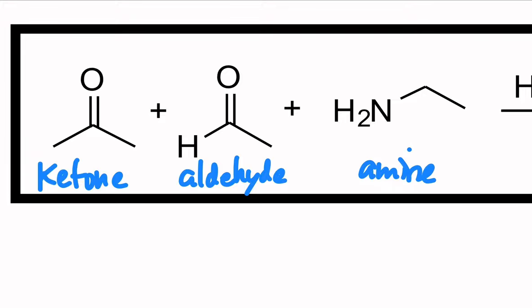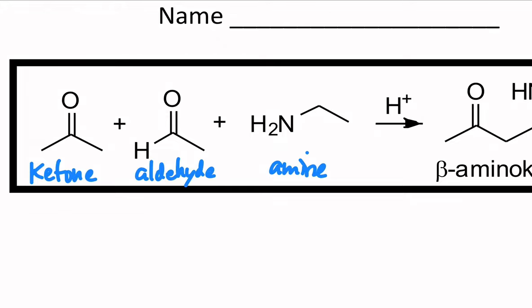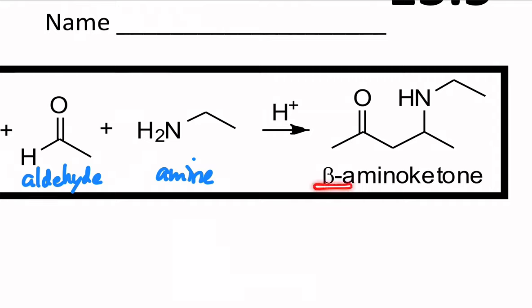We're under acidic conditions, so under acidic conditions we'll actually see some chemistry we've seen before, but it comes together to give us this beta-amino ketone. Remember, beta refers to not the alpha position, but one more away, and there's your amino group, that relative position away from the ketone.